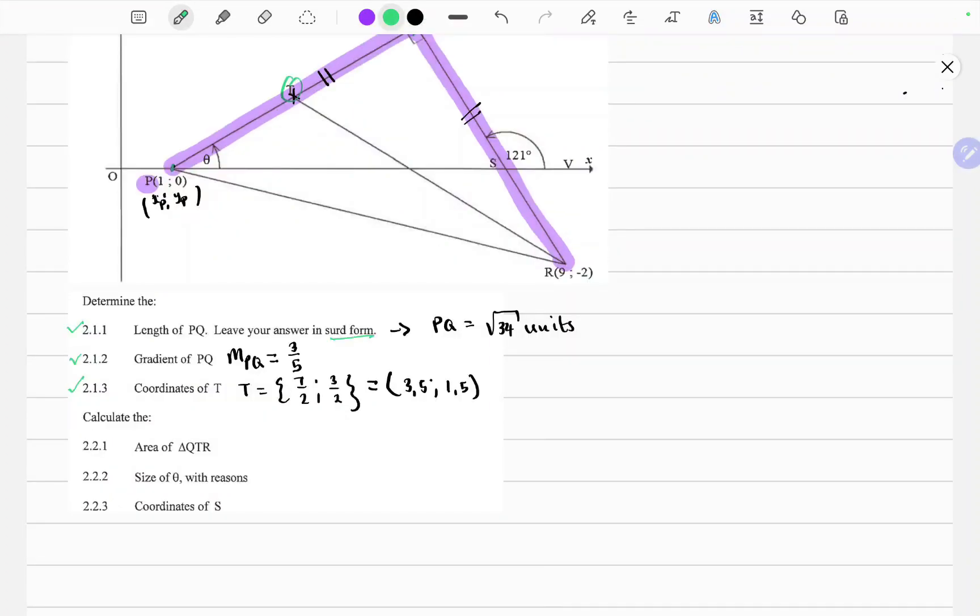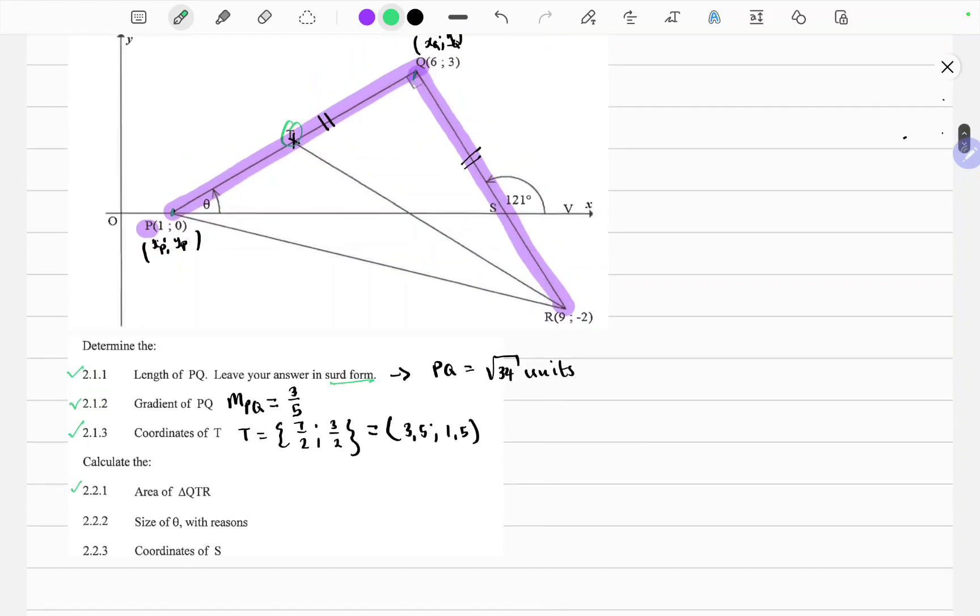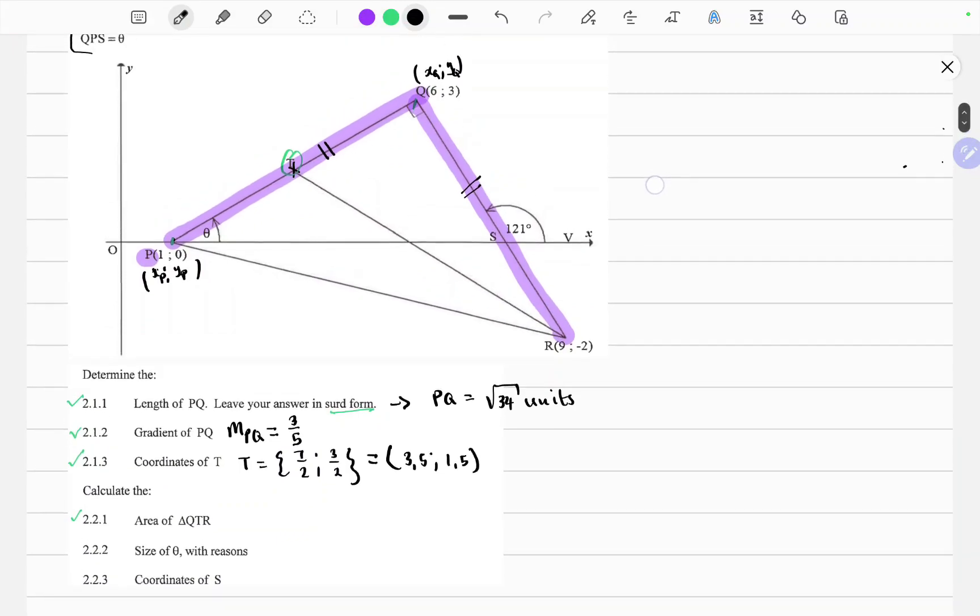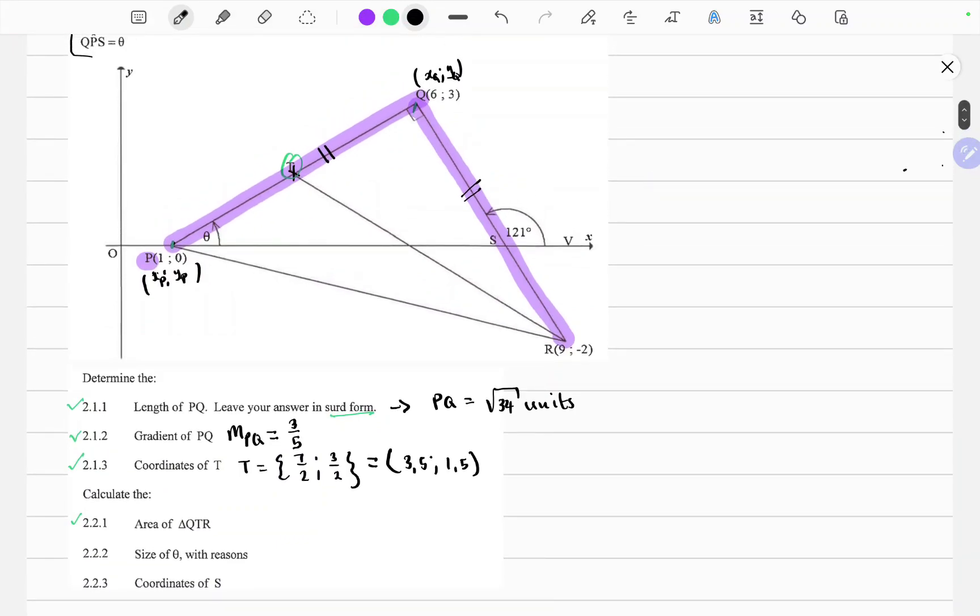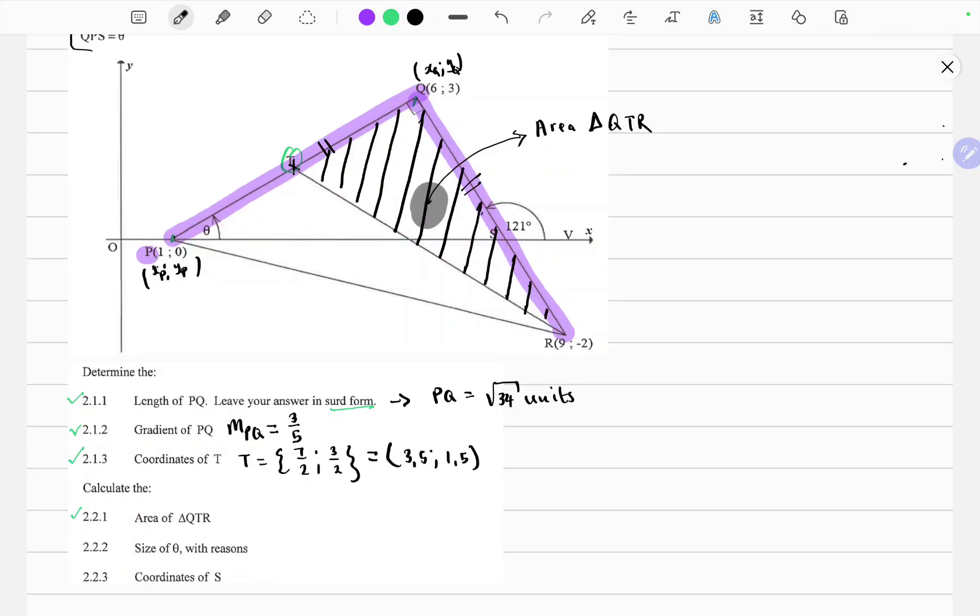Okay, so now they want us to calculate the area. This question 2.2.1, calculate the area of triangle QTR. So let's first identify the triangle QTR from the schematic given. So QTR is this triangle. So what I've done there is I've shaded the region for the area of triangle QTR. And we know the standard formula for the area of a triangle. Area is equals to half times base times perpendicular height.